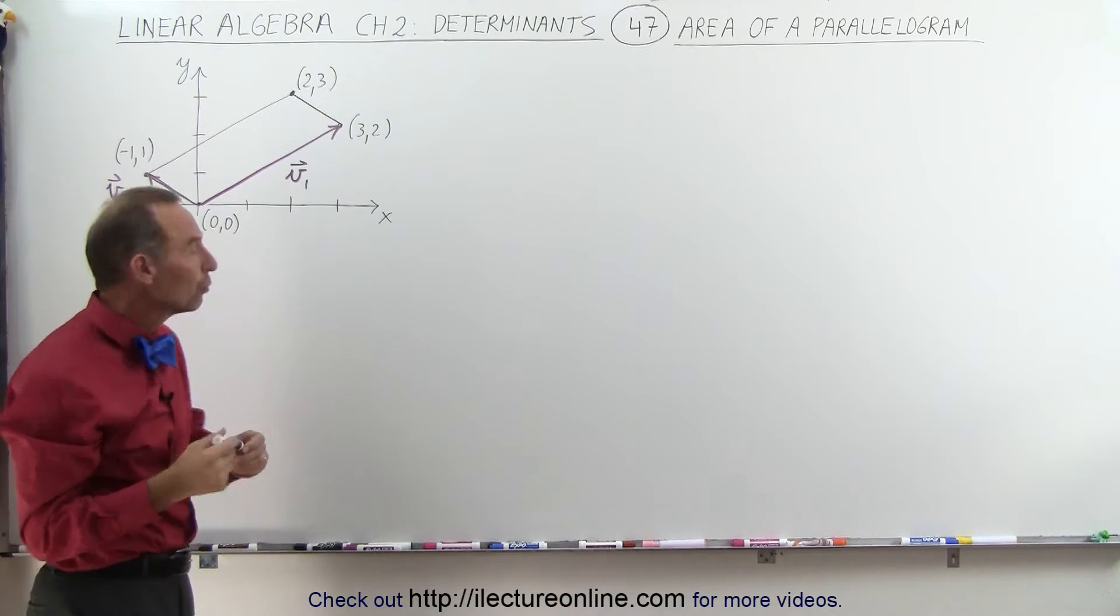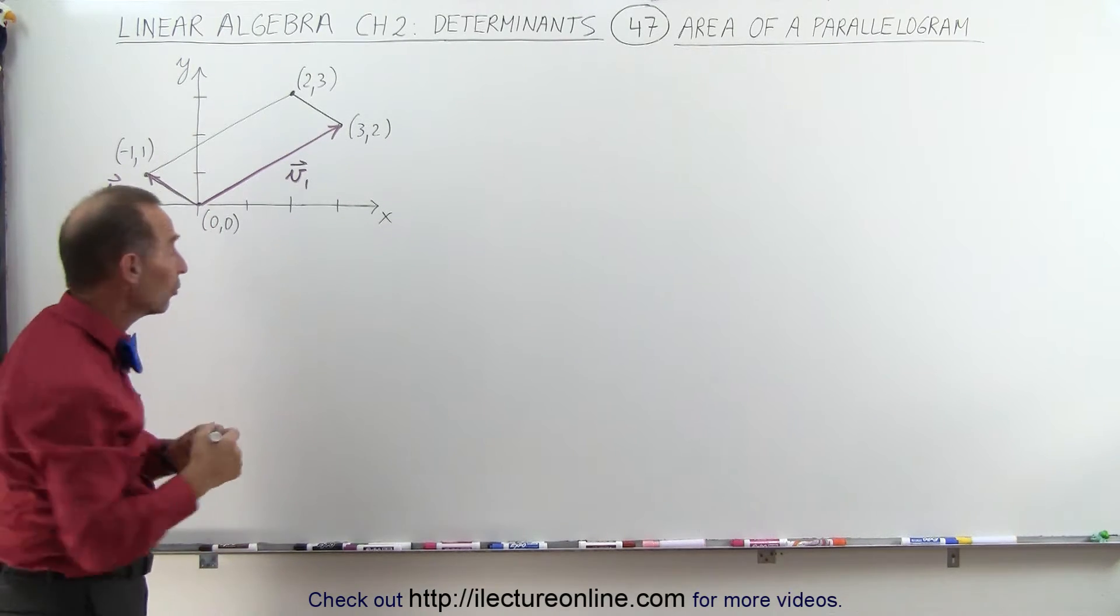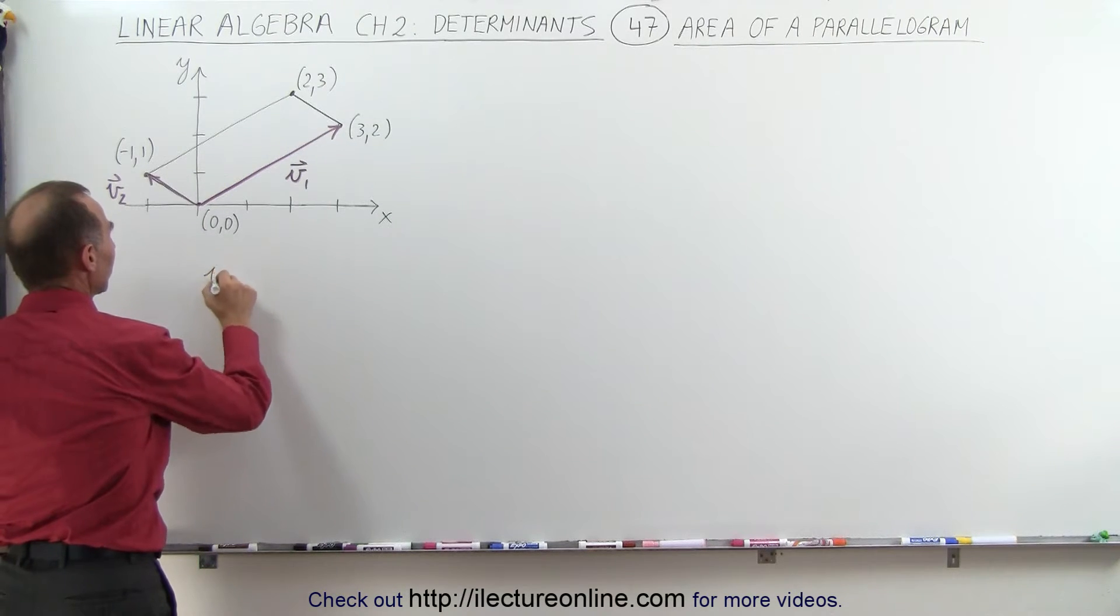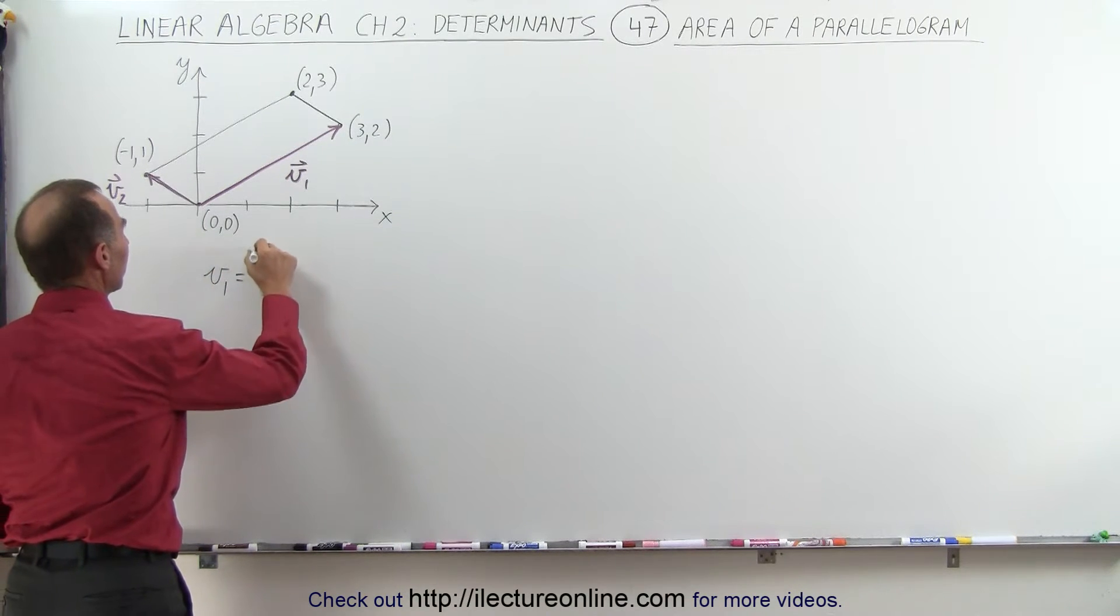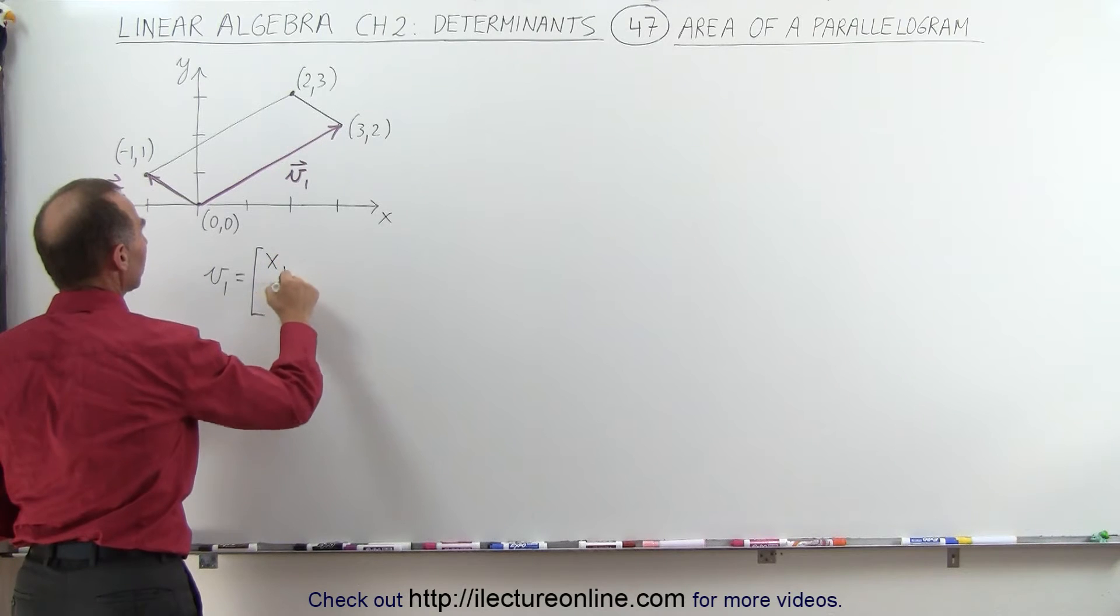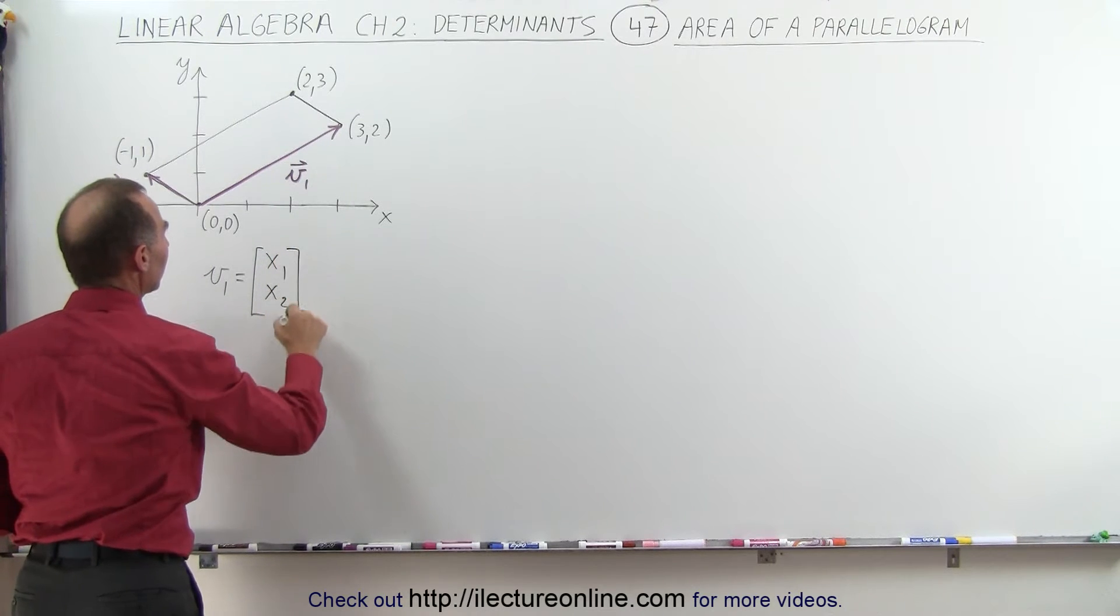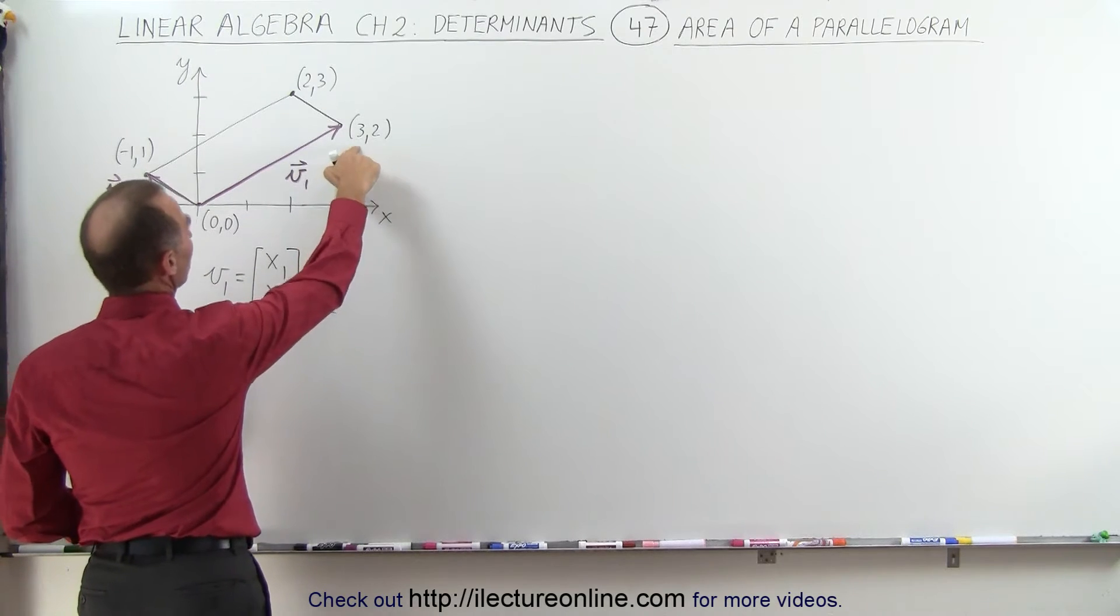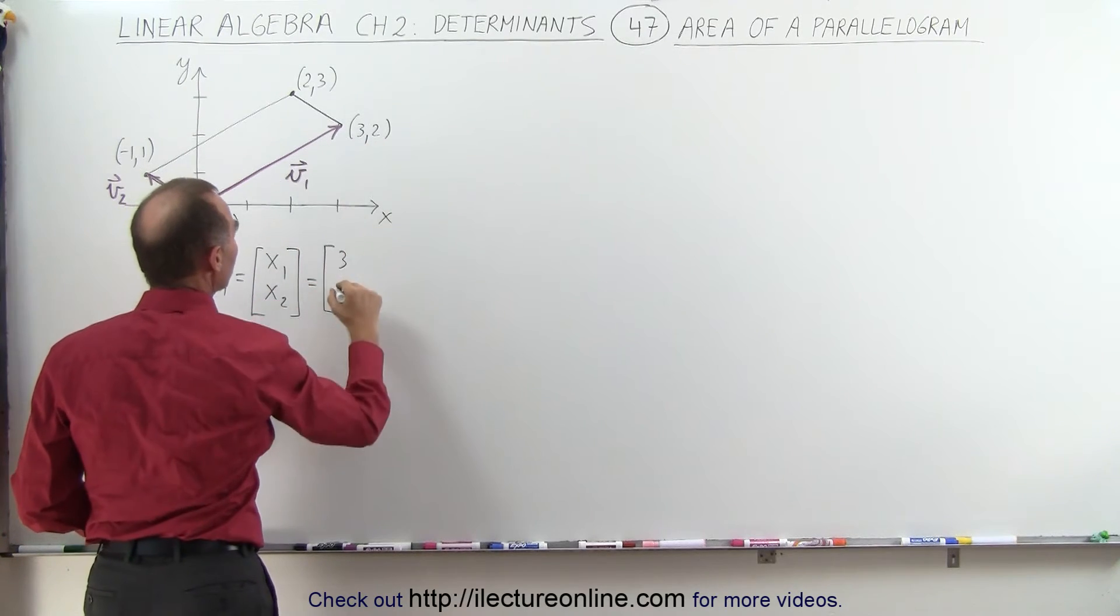We can now numerically represent those two vectors as matrices. Vector 1 can be represented by a matrix as follows: it will have the elements x₁ and x₂, and in this case that would be equal to x₁ = 3 and x₂ = 2.